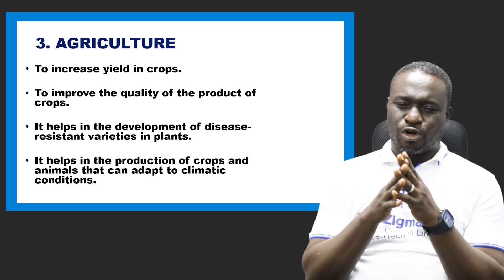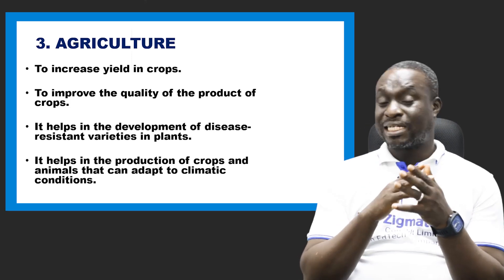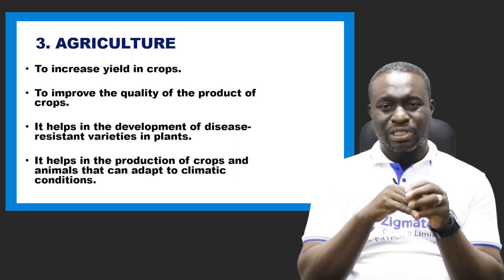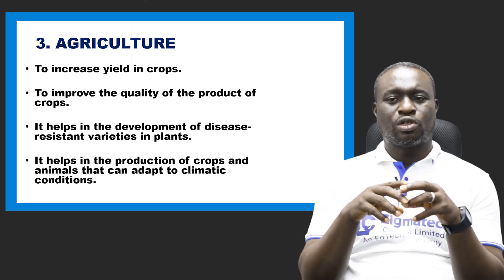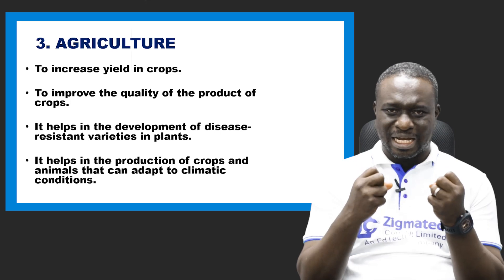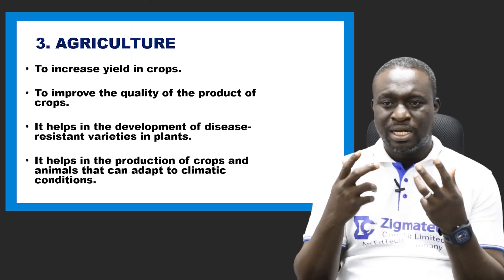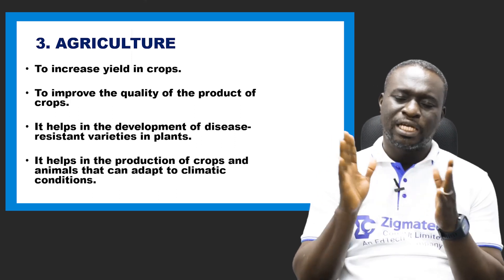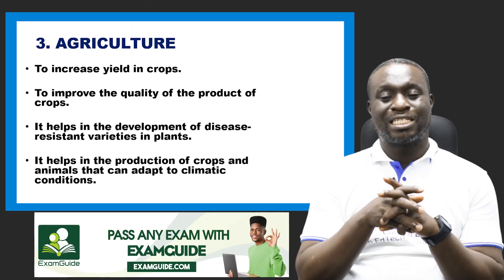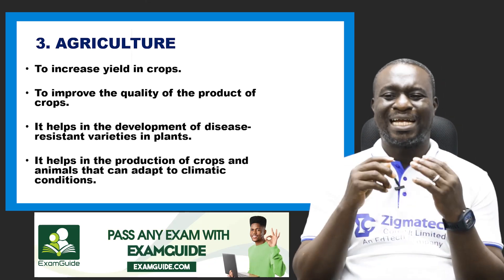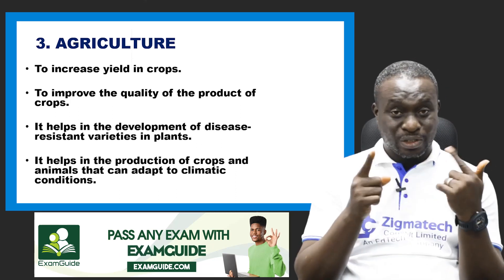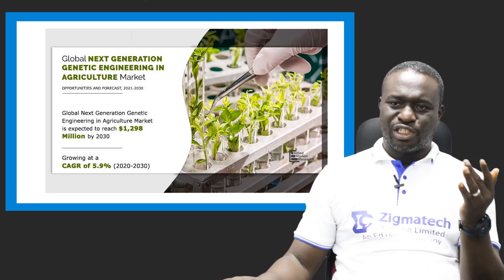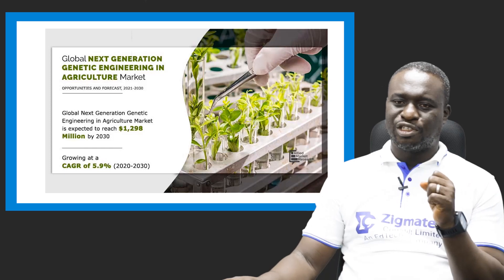Another application of the principle of heredity is in agriculture. Heredity can be applied in agriculture to increase the yield in crops, improve the quality of products of crops, and develop disease-resistant varieties in crops — some crops can now resist pests and diseases. It has also helped in the production of crops and animals that can adapt to climatic conditions, based on inbreeding and outbreeding. We can also see global next-generation genetic engineering in agriculture, which we will discuss further.